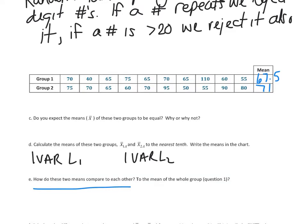So how do these two means compare to each other? Well, again, like I anticipated, they're pretty close. They're not the exact same, but they're fairly close to each other. And how do they compare to the whole mean? Well, remember that whole mean overall was 69.25. So again, I would say they're pretty close, not necessarily the same, but pretty close.